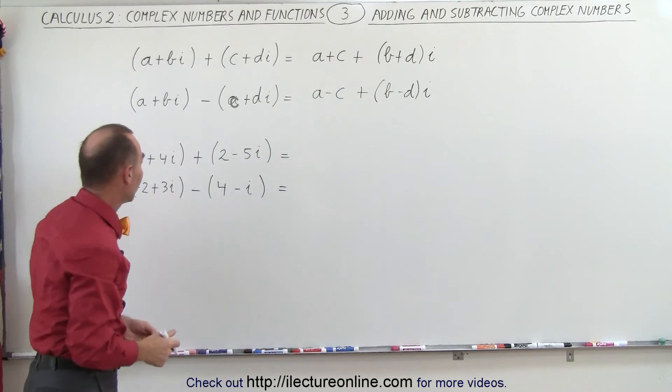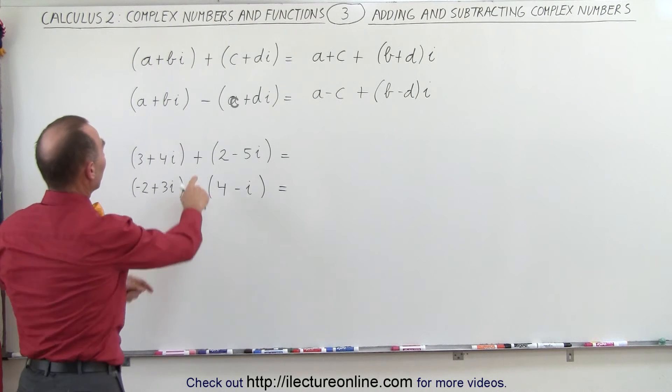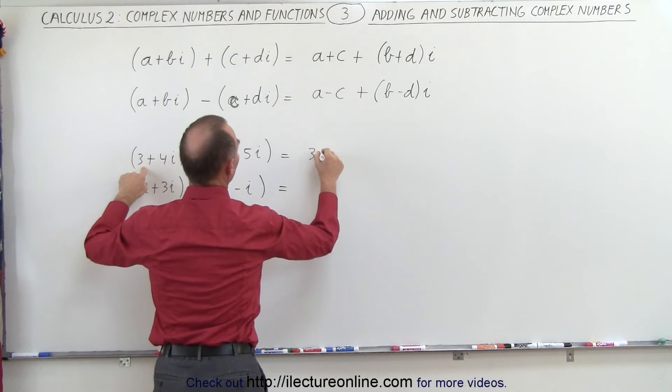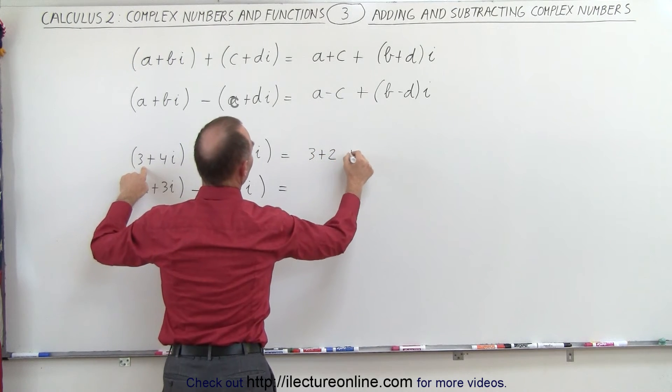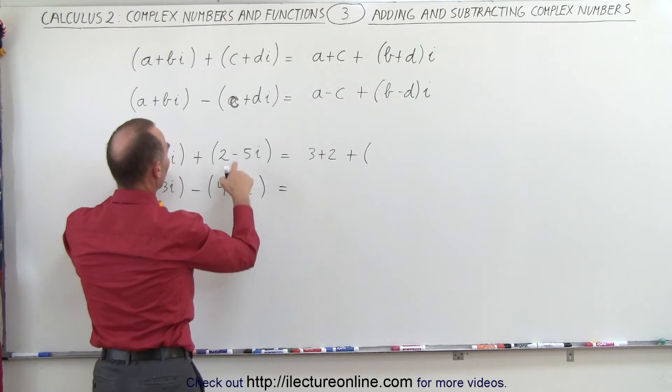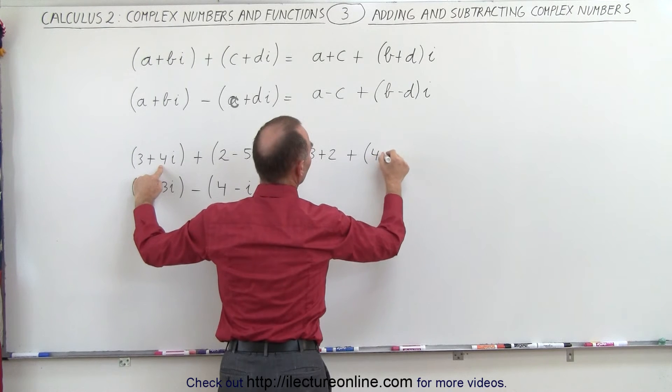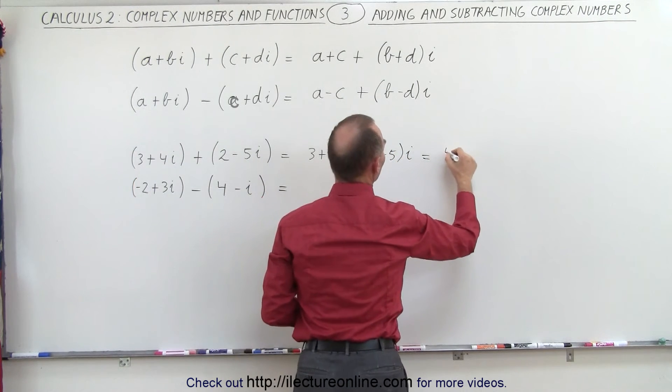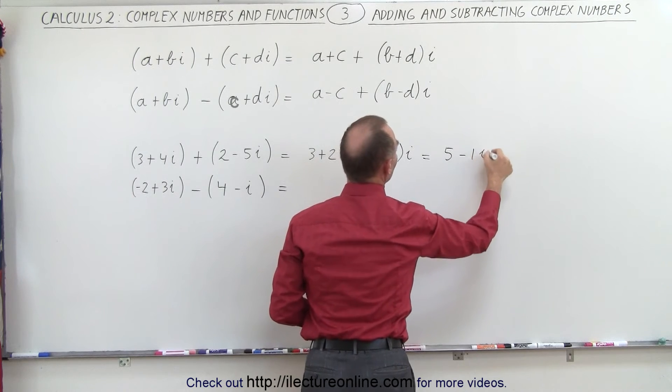Now let's try some examples. So with real numbers, since we're adding, we add the real parts together, so this becomes 3 plus 2, and then we add to that 4 minus 5, times i. So when we combine that, we get 5 minus 1i.